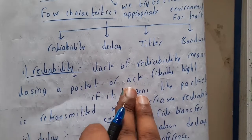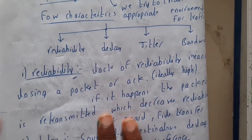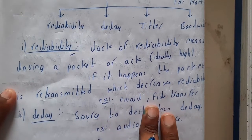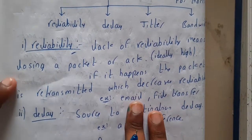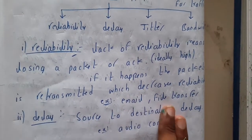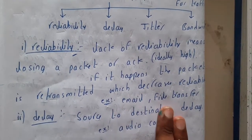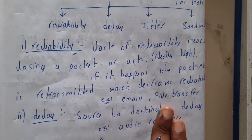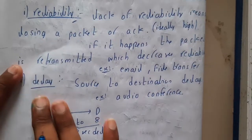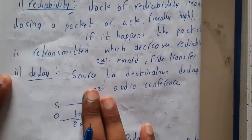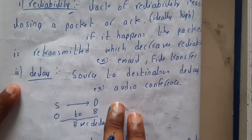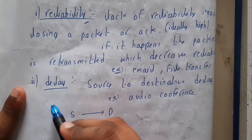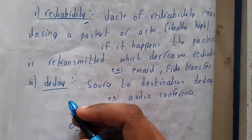If a packet loss happens, the packet is retransmitted, which decreases reliability. The best examples for reliability are email or file transfer — if there is any issue we'll be resending them again. Similarly, delay is nothing but the source-to-destination delay time. That is relevant for audio conferences and video calls.